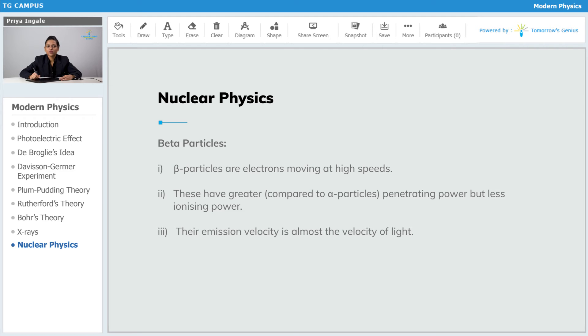Their emission velocity is almost equal to the velocity of light, which was not the case for alpha particles that we have seen.